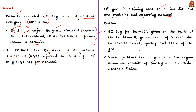The GI tag for Basmati rice was given on the basis of the traditionally grown areas of Basmati due to its special aroma, quality, and taste of the grain. These qualities are indigenous to the region below the foothills of the Himalayas in the Indo-Gangetic plains. The chief minister of Punjab said that Madhya Pradesh does not fall under this specialized zone for Basmati cultivation and therefore cannot be given a GI tag for its Basmati rice.